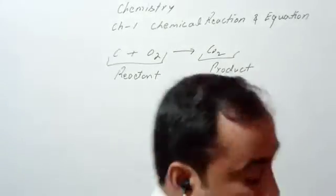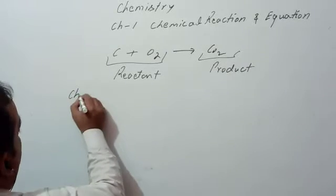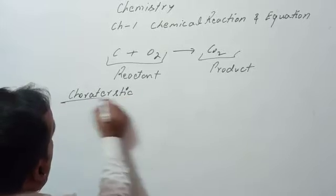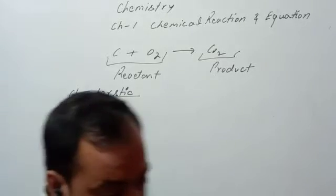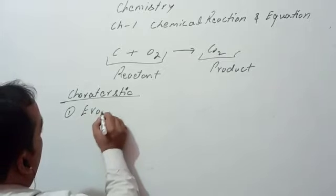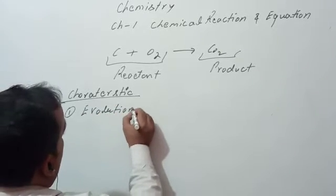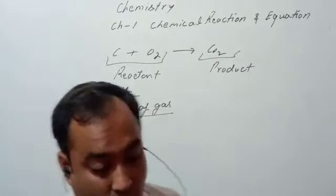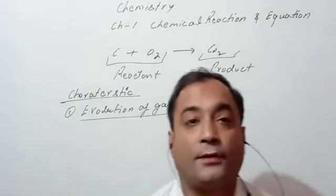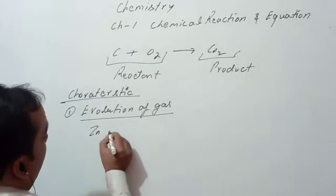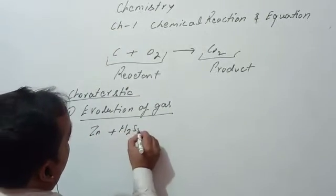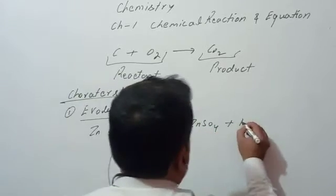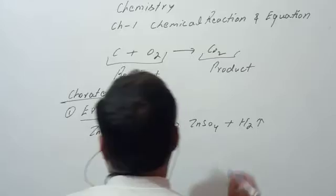So first characteristic is evolution of gas. Those reactions in which gases are evolved is called evolution of gas. For example, zinc plus sulfuric acid gives zinc sulfate and hydrogen gas. Here the hydrogen gas is evolved.